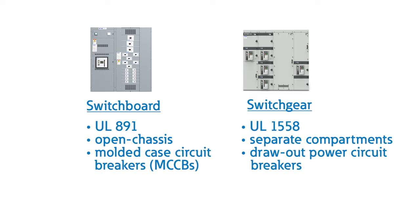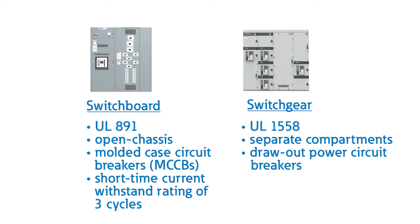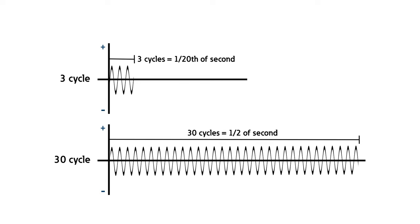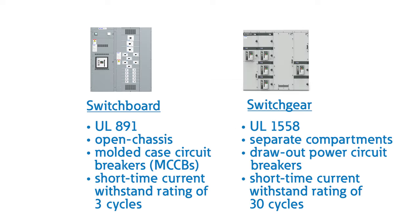Another major difference is short-time current withstand rating. A switchboard generally has three cycles for selective coordination with downstream components before tripping, and switchgear is rated to withstand 30 cycles. This extra time allows for coordination with downstream devices.